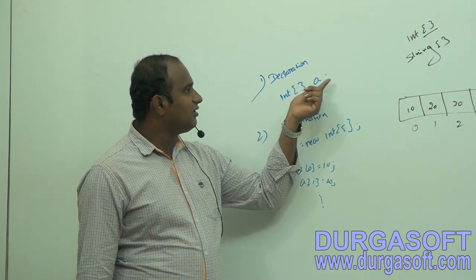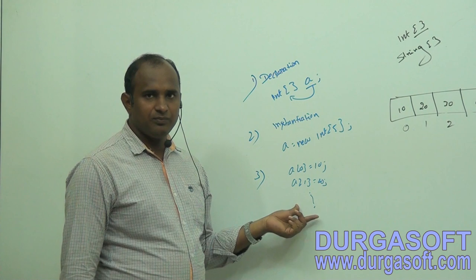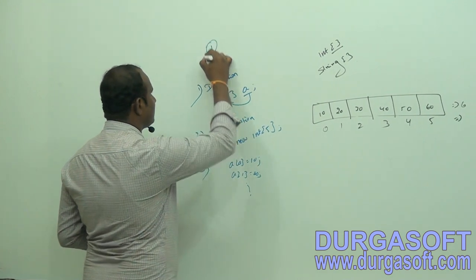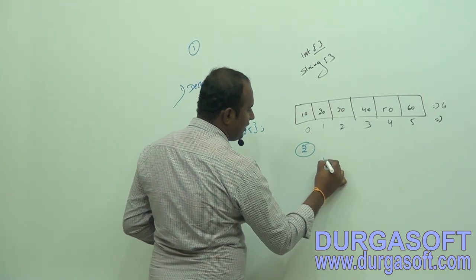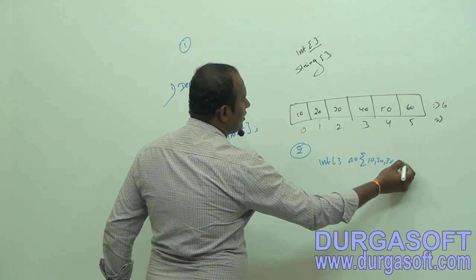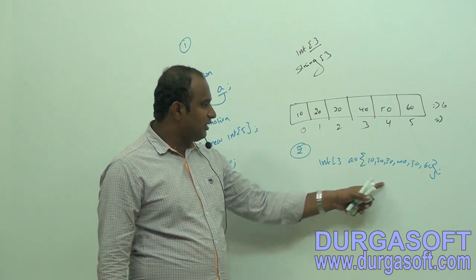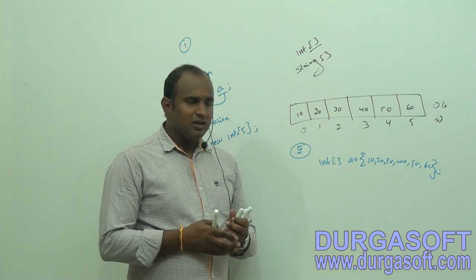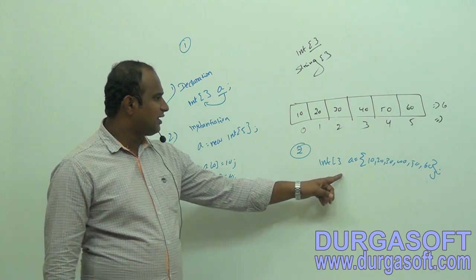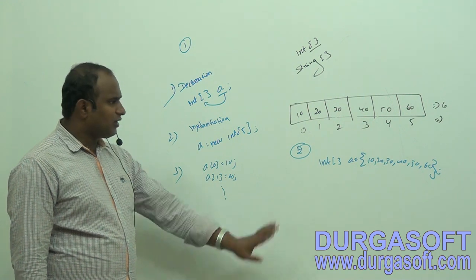The second format of array declaration is: directly create integer array A and assign values 10, 20, 30, 40, 50, 60 in one line. Here we are declaring, instantiating, and initializing all at once. These are the two forms to declare arrays — either use the three-step approach or the direct single-line approach.